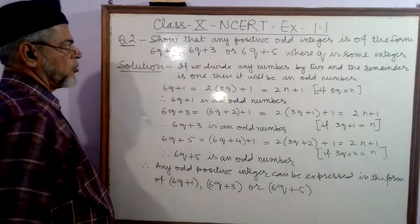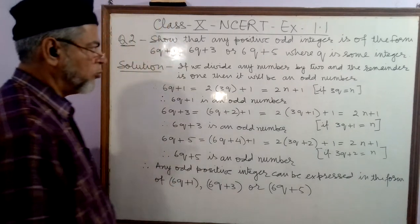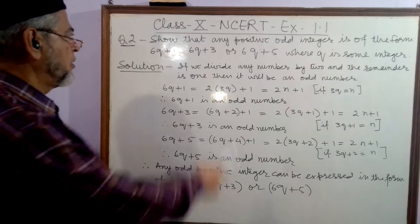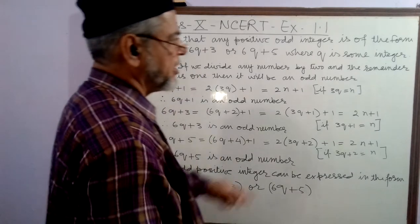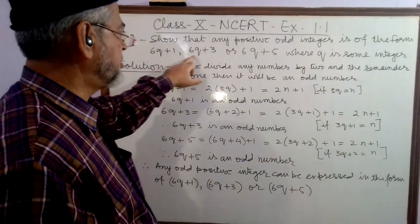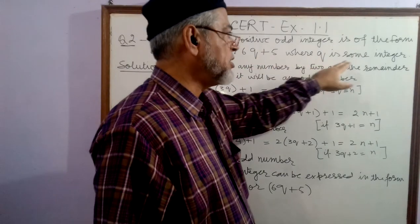This question has been taken from Class 10 NCERT, Example 1.1, Question 2. In this question, the writer has asked: Show that any positive odd integer is of the form 6q plus 1, 6q plus 3, or 6q plus 5, where q is some integer.